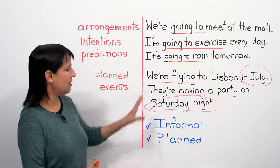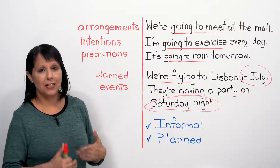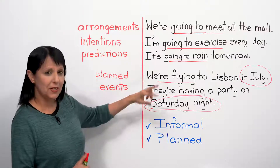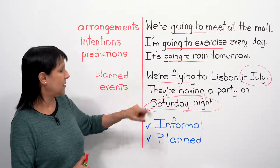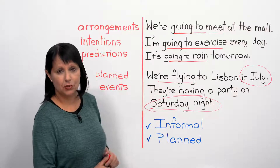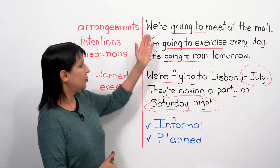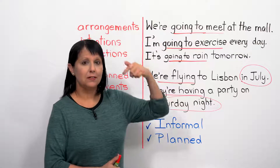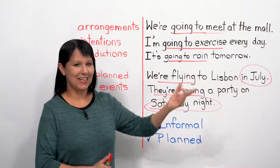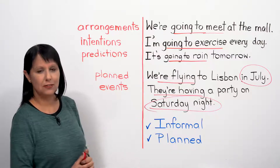These are the important ways and times when you can use these two forms. Remember, we can flip them around. I could say 'We're going to fly to Lisbon in July,' or 'We're meeting at the mall tomorrow.' If you're using present continuous, you'll need to add a time marker, but use it freely for all these situations.